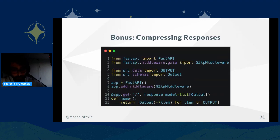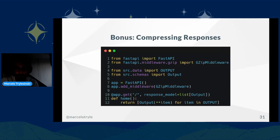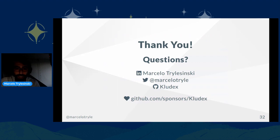The last tip I'm going to give — which didn't make much sense for my specific benchmark — is compressing the responses before sending them back to the client. One way to do this is using the GzipMiddleware. I didn't put benchmarks here because on my specific application it didn't have any improvement. So please try it out — and that's it. Thank you very much. You can follow me on Twitter, and I am clodex on GitHub and Marcelo Treslinski on LinkedIn.